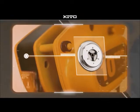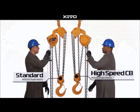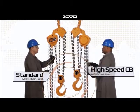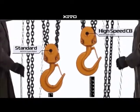When loaded, a high-speed CB hoist and a standard M3CB hoist will lift at exactly the same speed. However, when unloaded, the high-speed CB hoist operates seven times faster than a standard unit in the up or down direction.